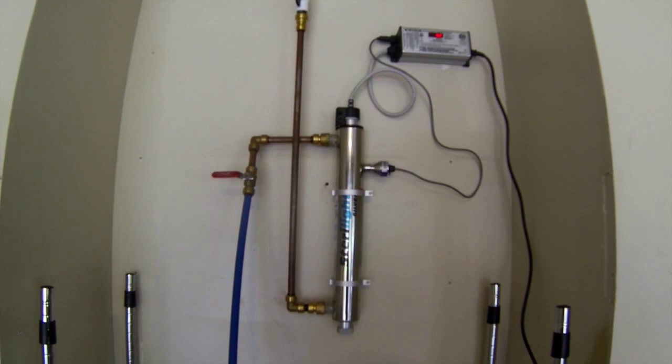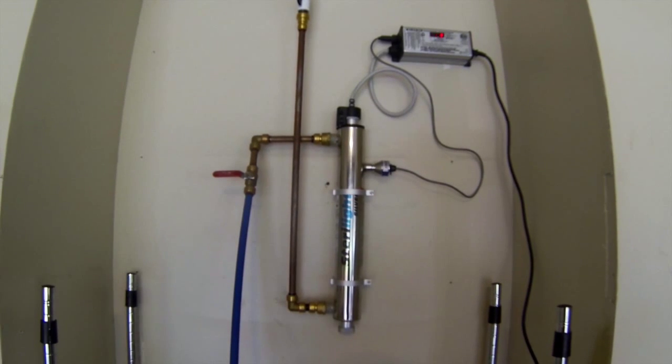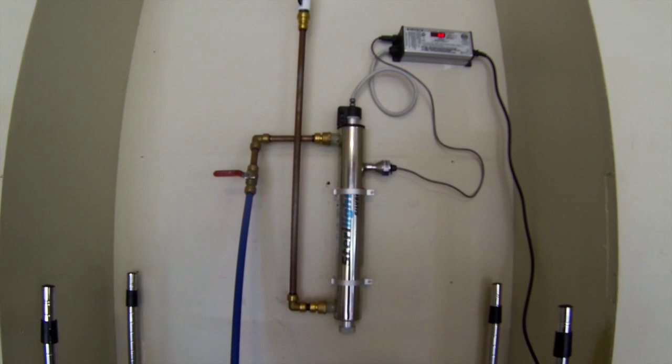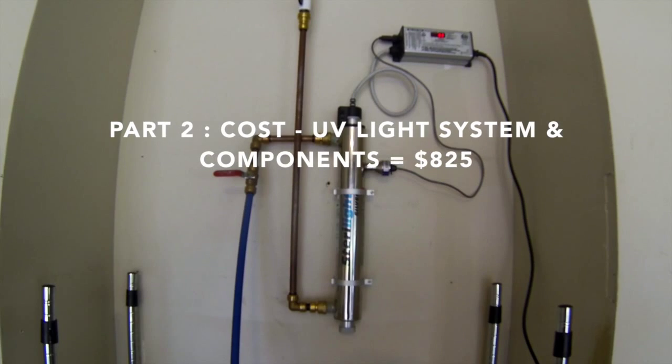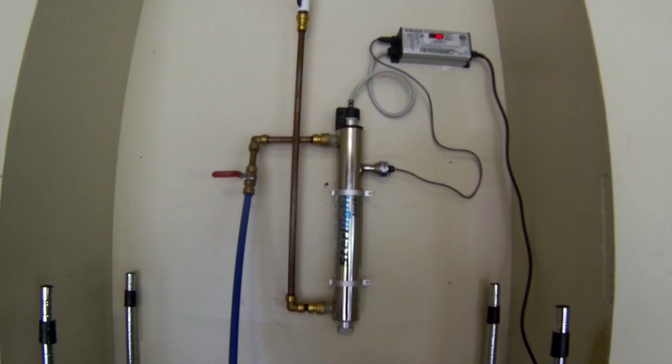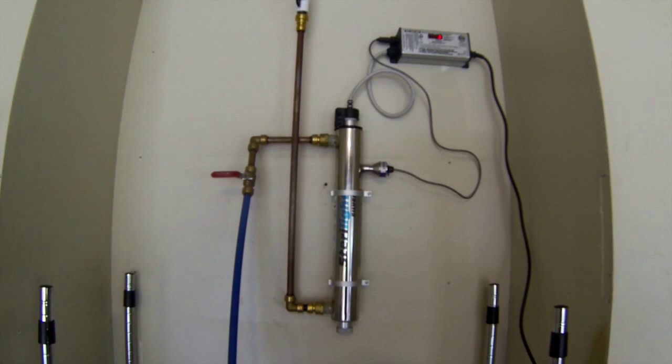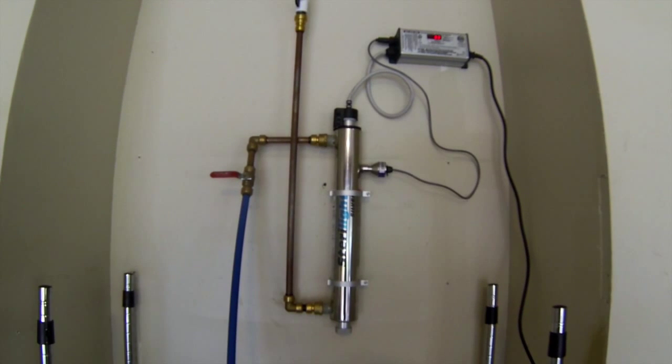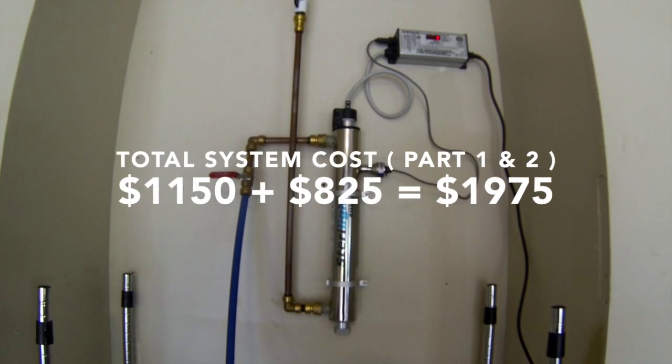These are all the parts you will need for part 2 of this video. The total cost of all the parts for part 2 is $825. The total cost for the entire system, part 1 and part 2, is $1,975.